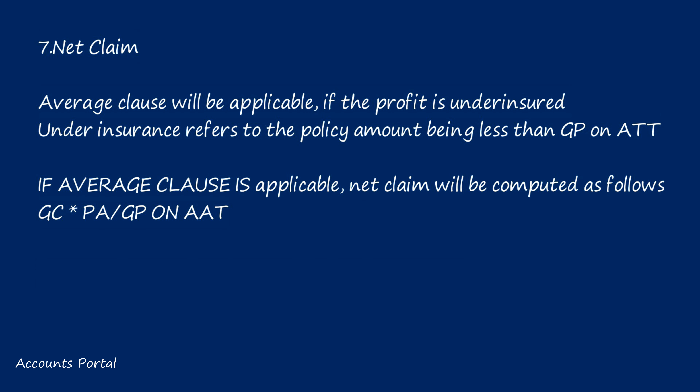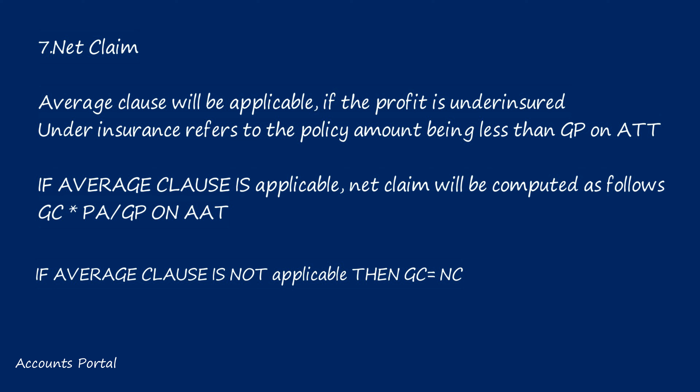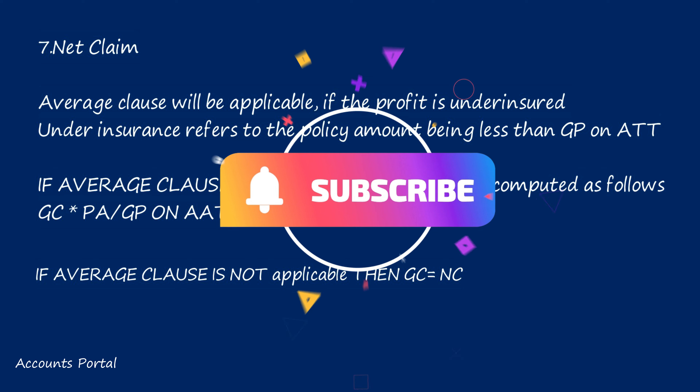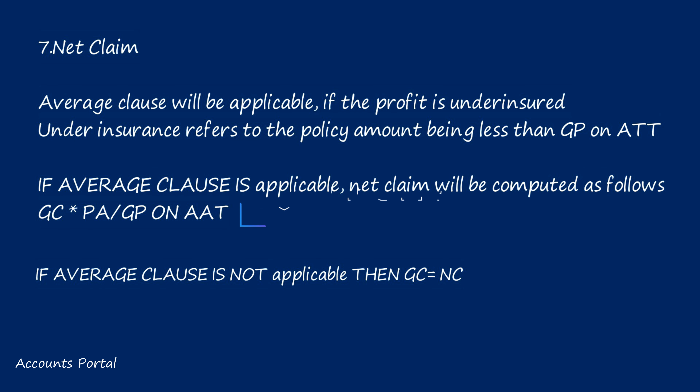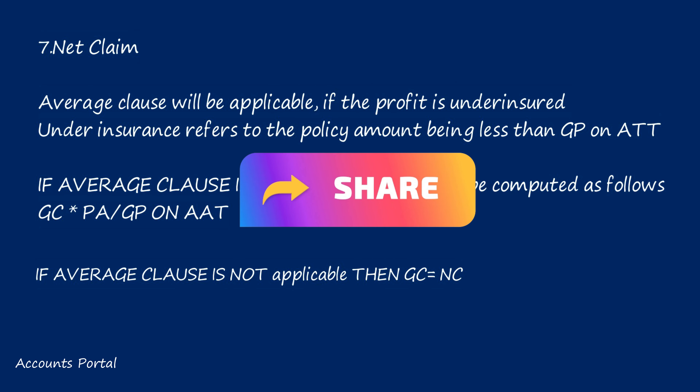Step eight: the average clause is applicable if the profit is underinsured. Underinsurance means the policy amount is less than GP on AAT. Compare the policy amount with GP on AAT. If the average clause is applicable, net claim equals gross claim into policy amount divided by GP on AAT. If the average clause is not applicable, gross claim equals net claim. We will learn each step in detail while solving problems; steps seven and eight will be covered in detail during the problem-solving sessions.